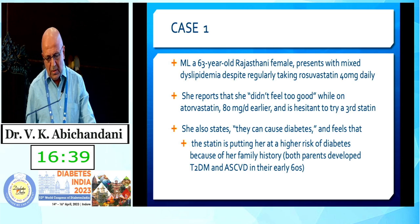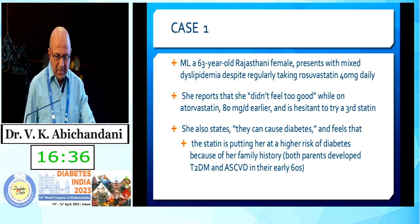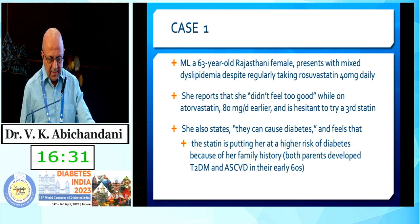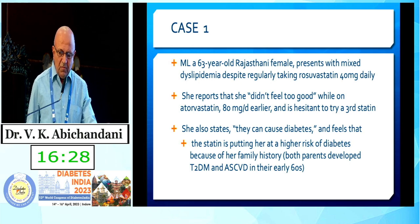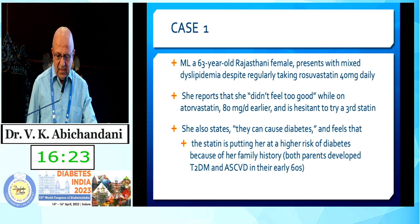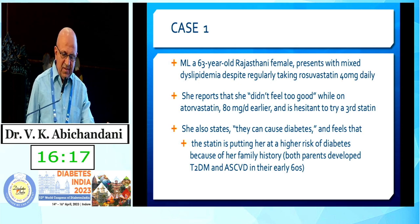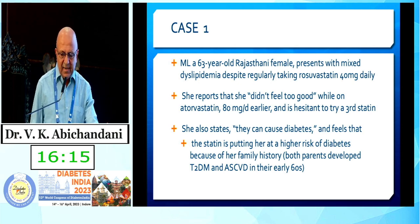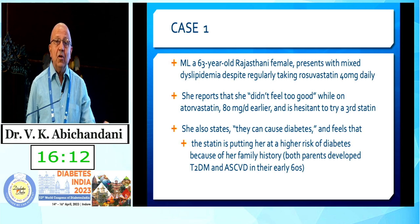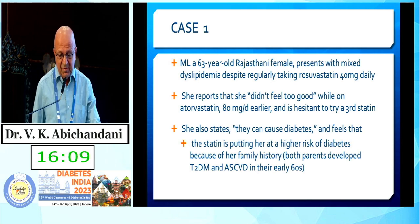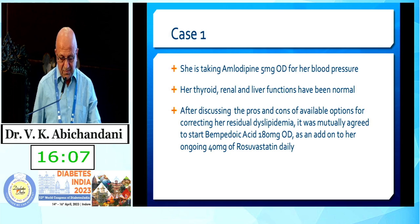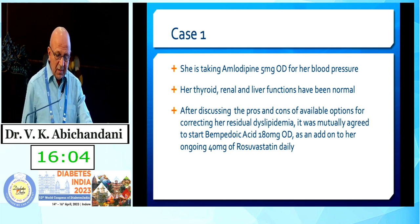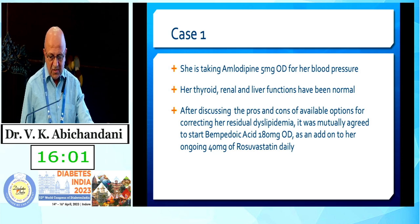Case one: Amel, a 63-year-old Rajasthani female, presents with mixed dyslipidemia despite regularly taking rosuvastatin 40 mg daily. She didn't feel well on atorvastatin 80 mg earlier and is hesitant to try any third statin. She also fears these drugs can cause diabetes, given her family history — both parents having developed type 2 diabetes and ASCVD in their early 60s. She is on amlodipine 5 mg for blood pressure; thyroid, renal, and liver functions are normal.